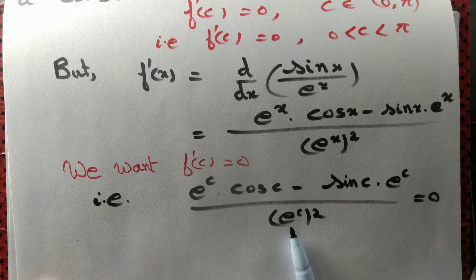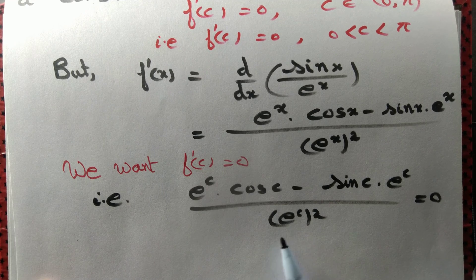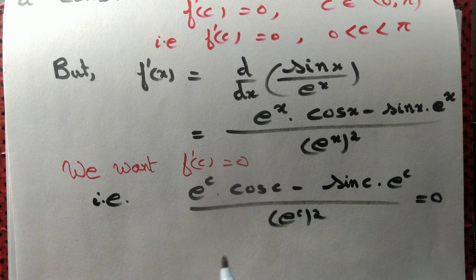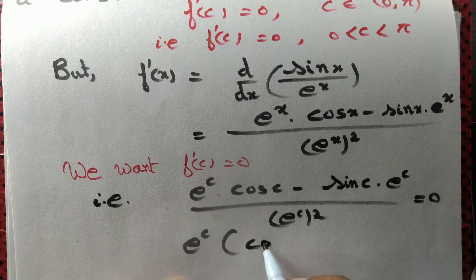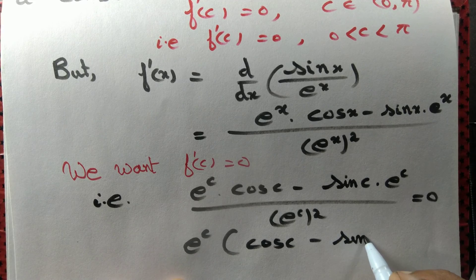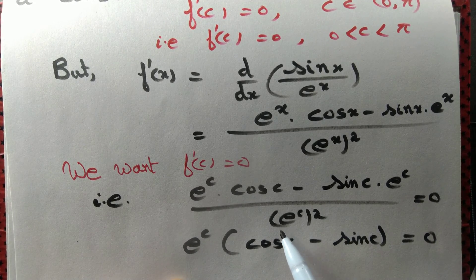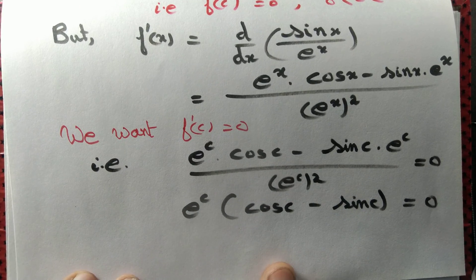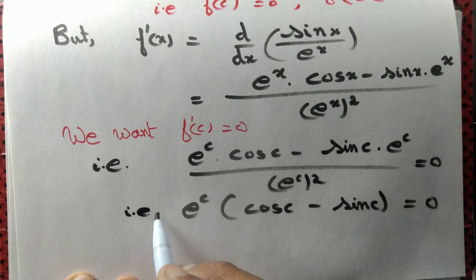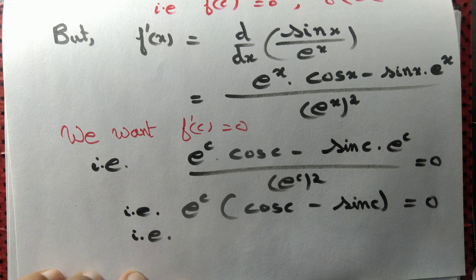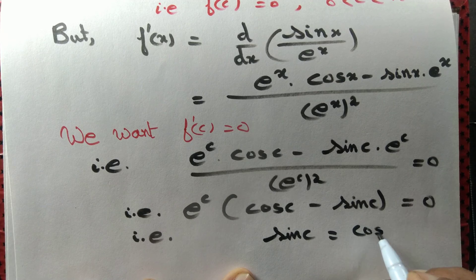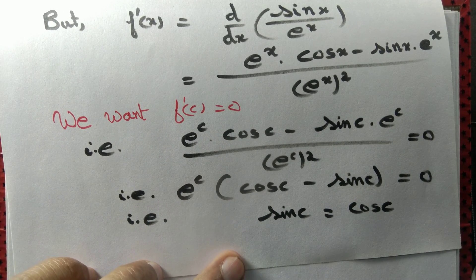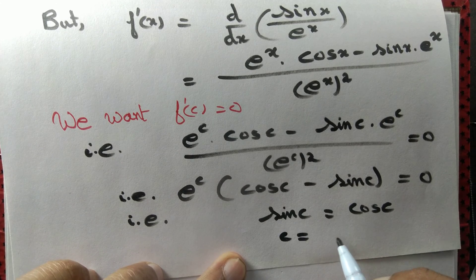The denominator (e^x)² is never 0, so we focus on the numerator. Setting f'(c) = 0, we factor out e^c from the numerator, leaving cos(c) − sin(c) = 0. This means sin(c) = cos(c), or equivalently tan(c) = 1, giving c = π/4.